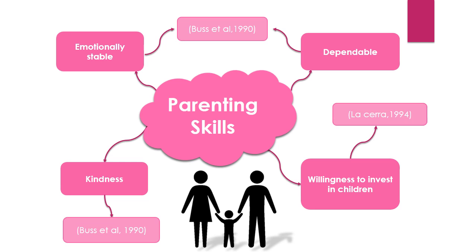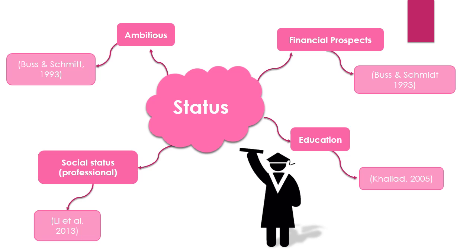Lastly, females look for status. This means that males should be ambitious, well educated, have high financial prospects, and therefore have more resources to invest in the female and their offspring. A good social status provides a powerful cue to his possession of resources.